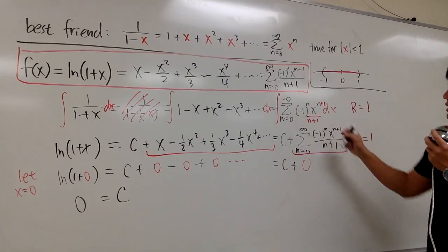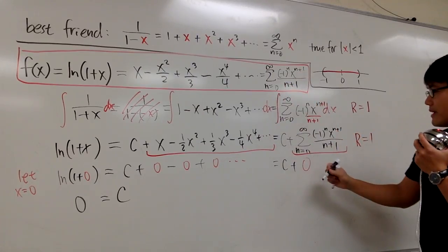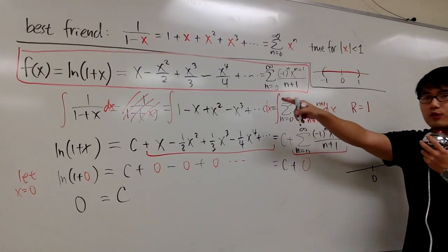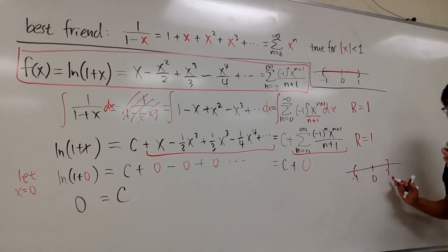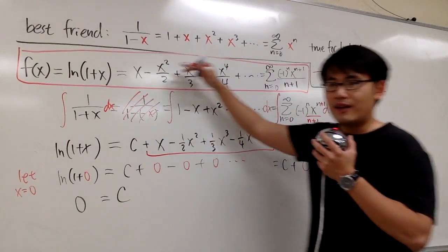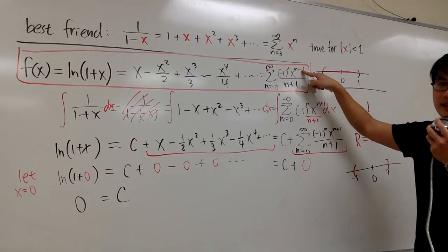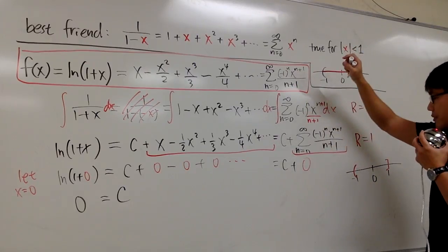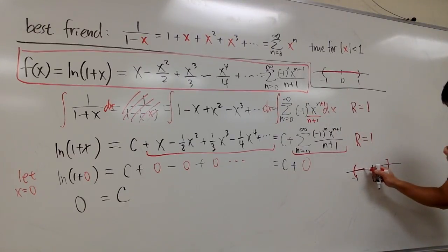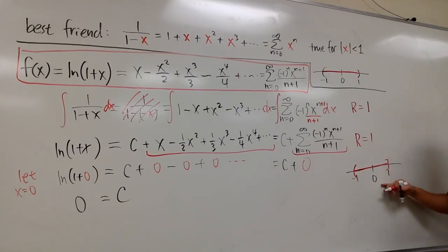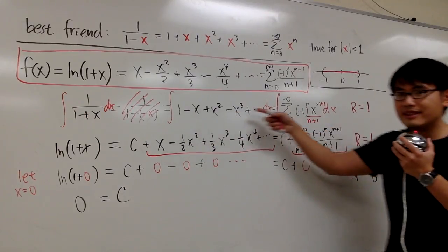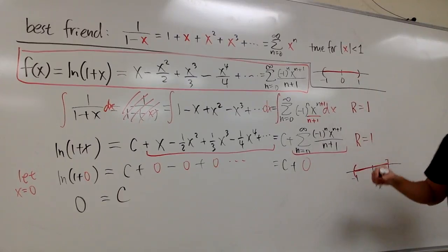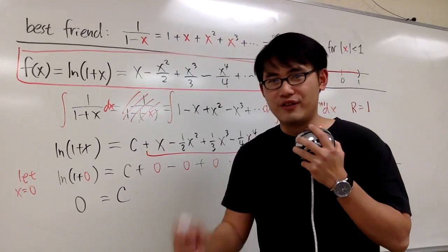For ln(1+x), the interval of convergence goes one unit left and one unit right from 0. We do not include the left endpoint negative 1, but we do include the right endpoint 1. When x equals 1, the series converges because plugging in gives a convergent alternating series. So the interval of convergence is from negative 1 to 1, not including negative 1 but including 1. For 1 over 1+x it's the same interval — always check endpoints when you integrate or differentiate.